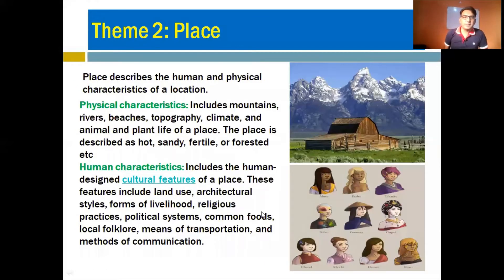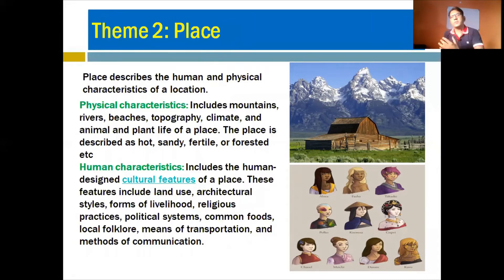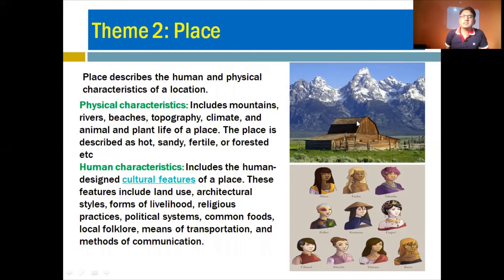Number two is place. Place describes the human and physical characteristics of a location. If you are at a location, you will see both its physical and human characters. Physical characteristics include mountains, rivers, beaches, topography, climate, animals, and plant life. A place may be described as hot, sandy, fertile, or forested.